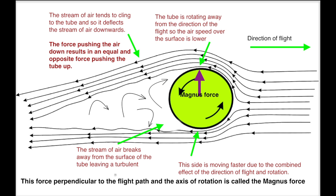Because of the spin, the air flowing over the top of the tube clings to it rather better than the air flowing around the bottom. The force pushing the air downwards has an equal and opposite force pushing the tube up.